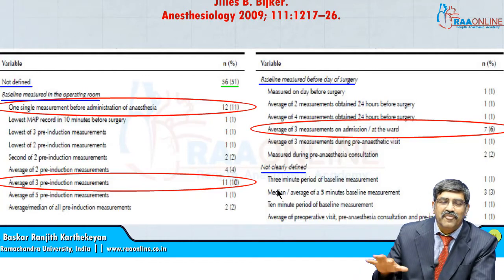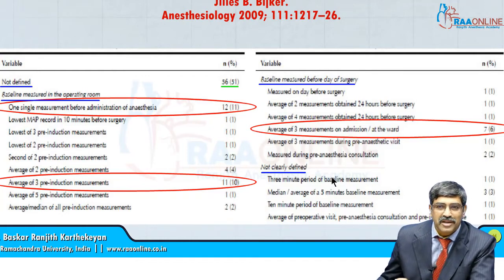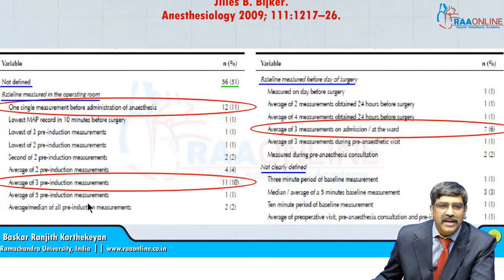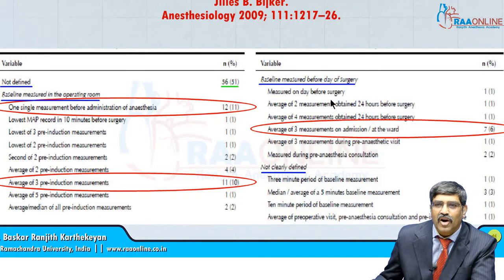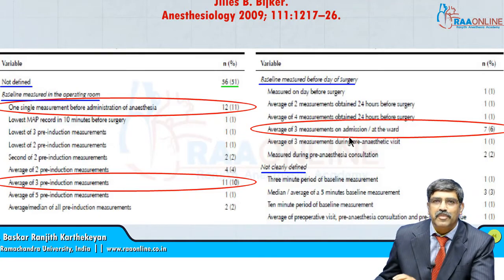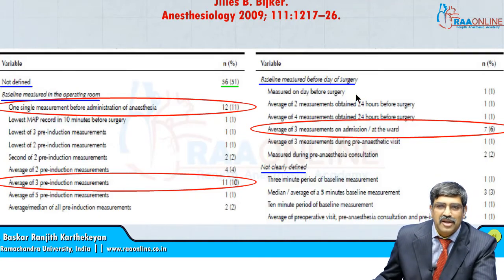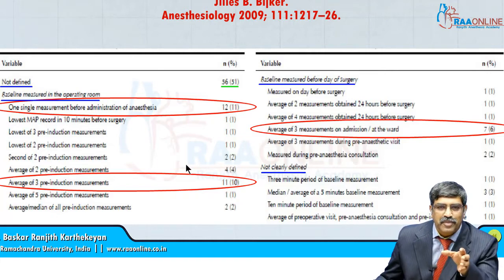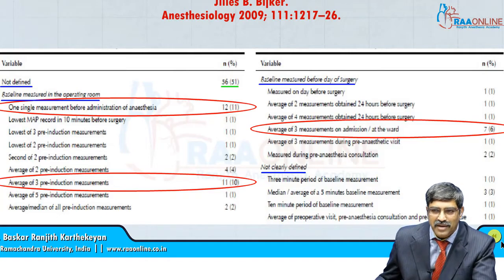These are the various things which are available for measuring blood pressure. But commonly, what we take is one single measurement just before the administration of anesthesia, or an average of three pre-induction measurements, or an average of three measurements on admission to the ward. With this measurement only, you compare your perioperative blood pressure and say the patient has hypotension or hypertension.